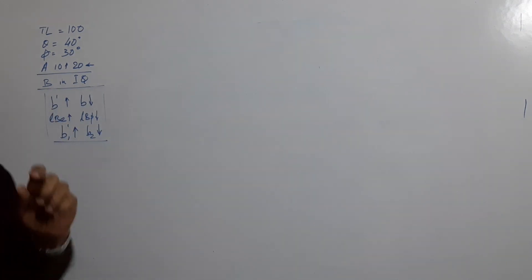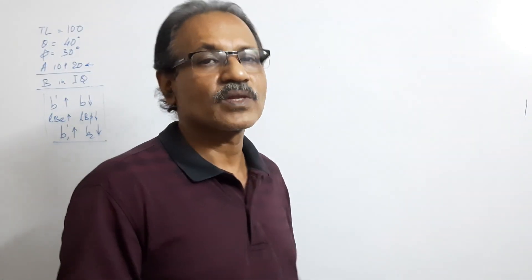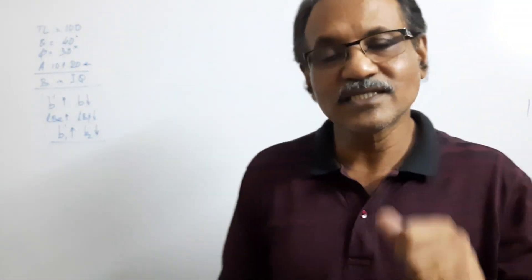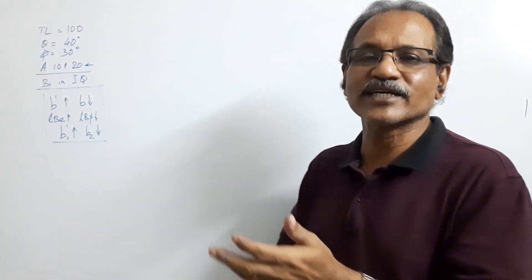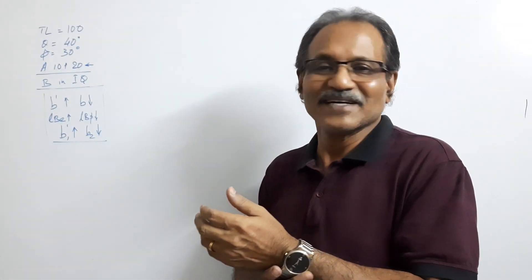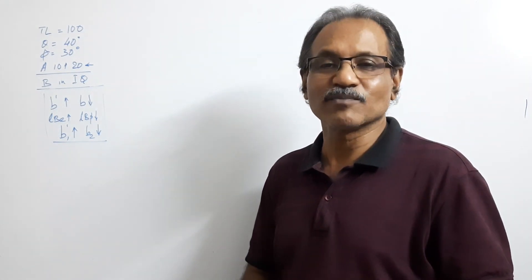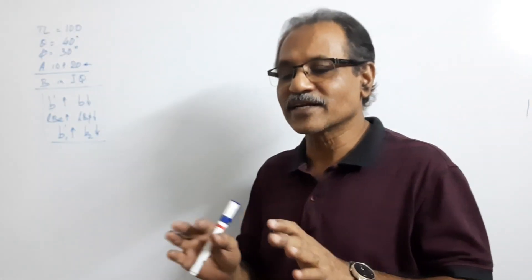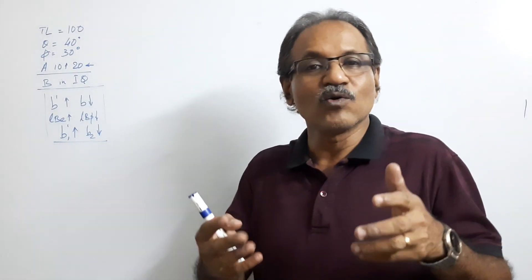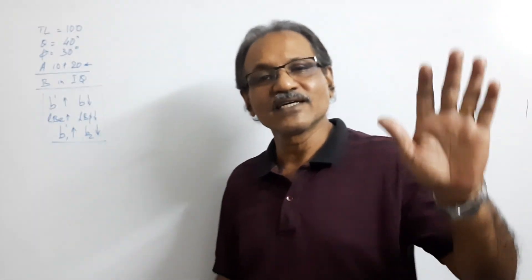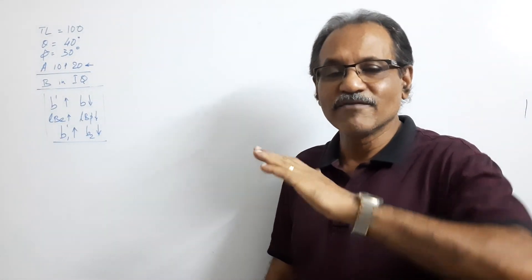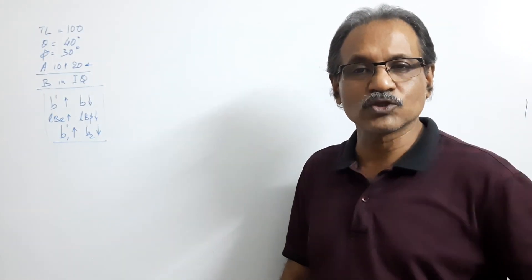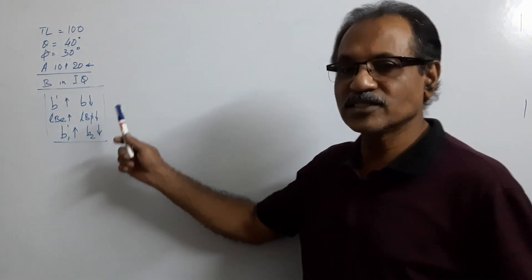It is always safe to keep the same notations. Changing the notations will sometimes put you in trouble — when you are in trouble you will not be able to recall what we have learned. Always keep the same notation. When you assume a line is parallel to VP, use suffix 1; when the line is parallel to HP, use suffix 2.